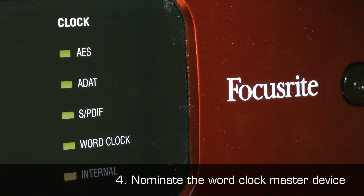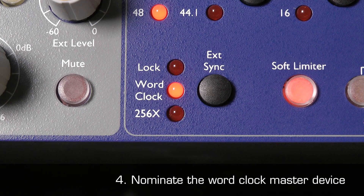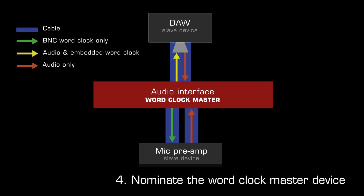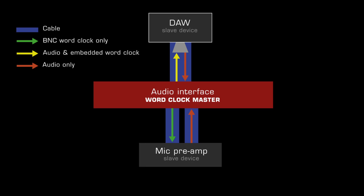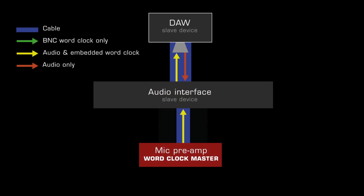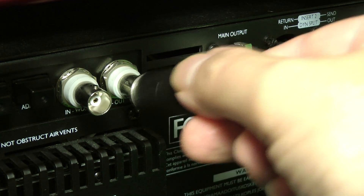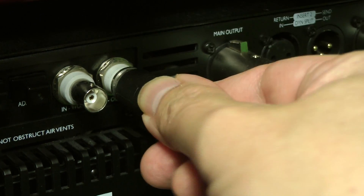Four, nominate the device which will operate as the word clock master — either the audio interface or the mic pre-voice channel. If the mic pre-voice channel does not have either word clock or digital in, you will have to set it as the word clock master.